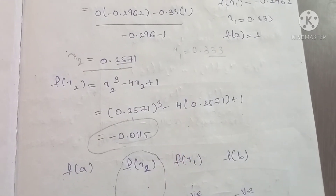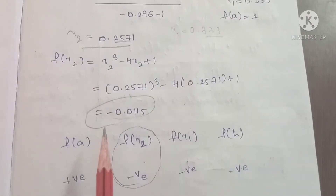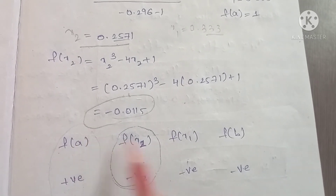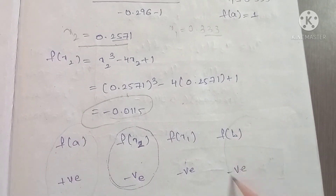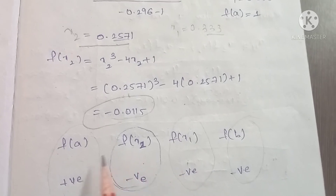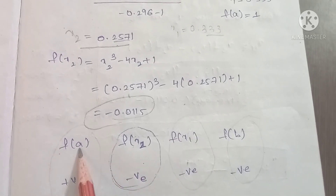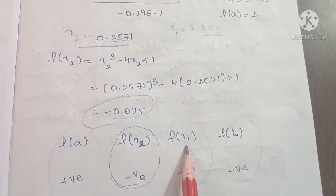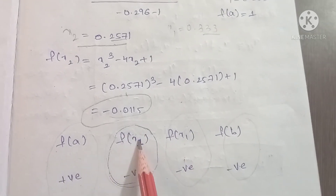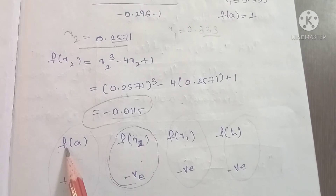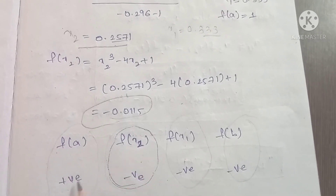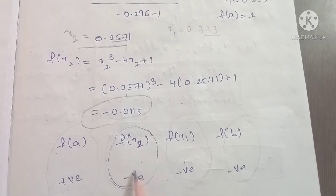Now we find f(x2). f(x2) = (0.2571)³ - 4×0.2571 + 1. The answer is approximately -0.0115. Since f(a) is positive and f(x2) is negative, opposite signs confirm the root lies between a and x2.